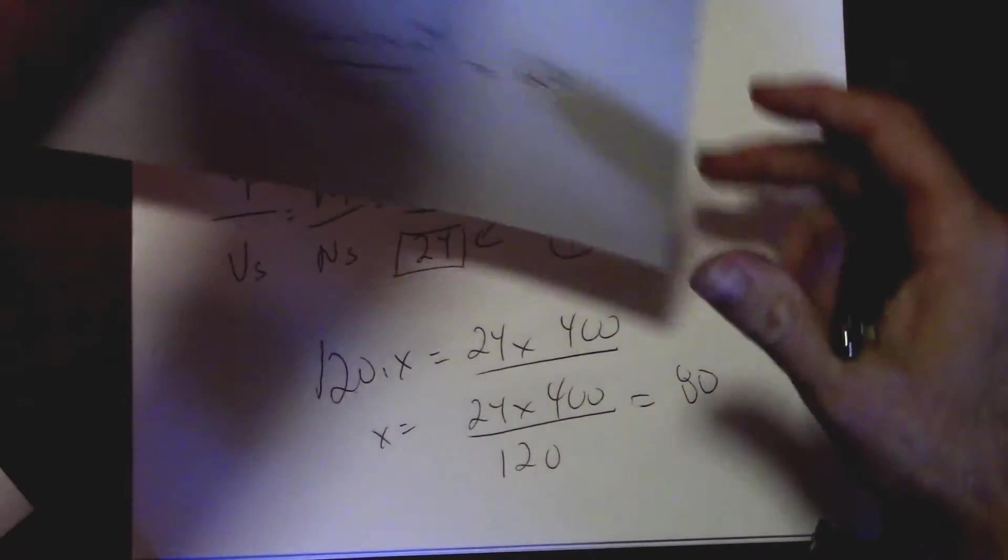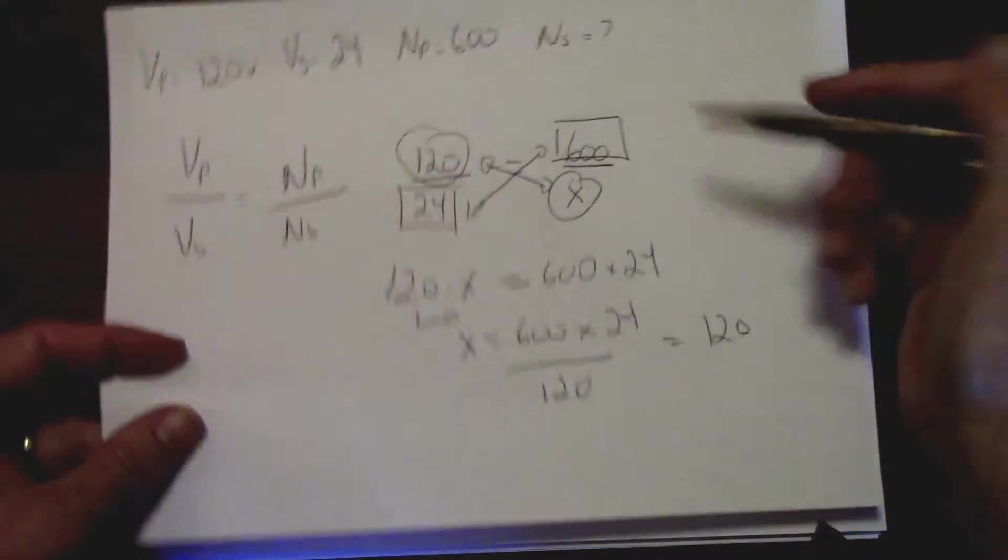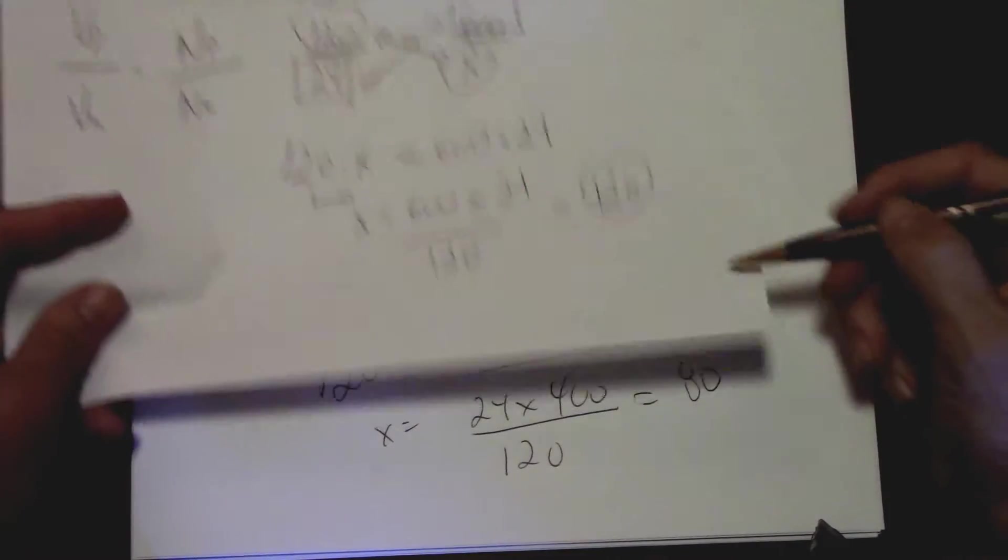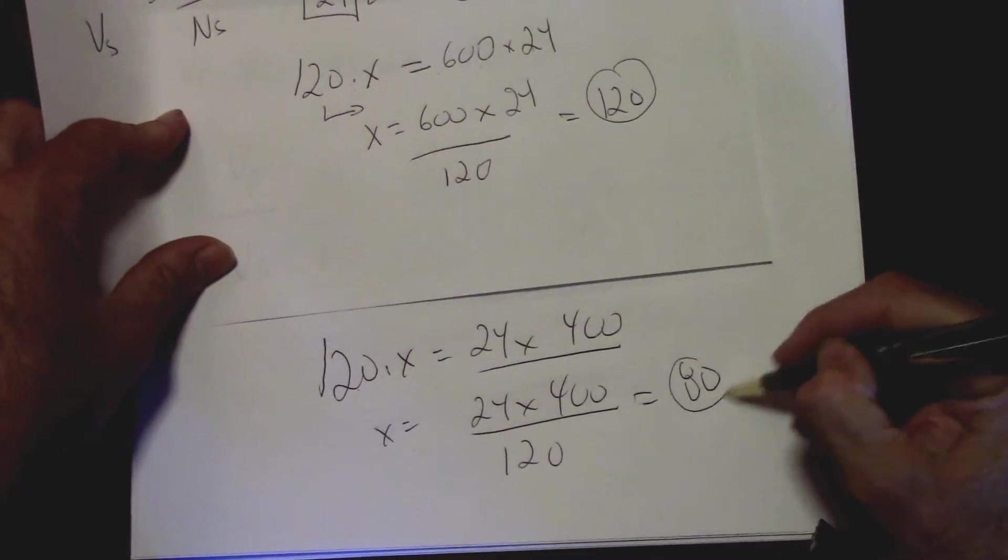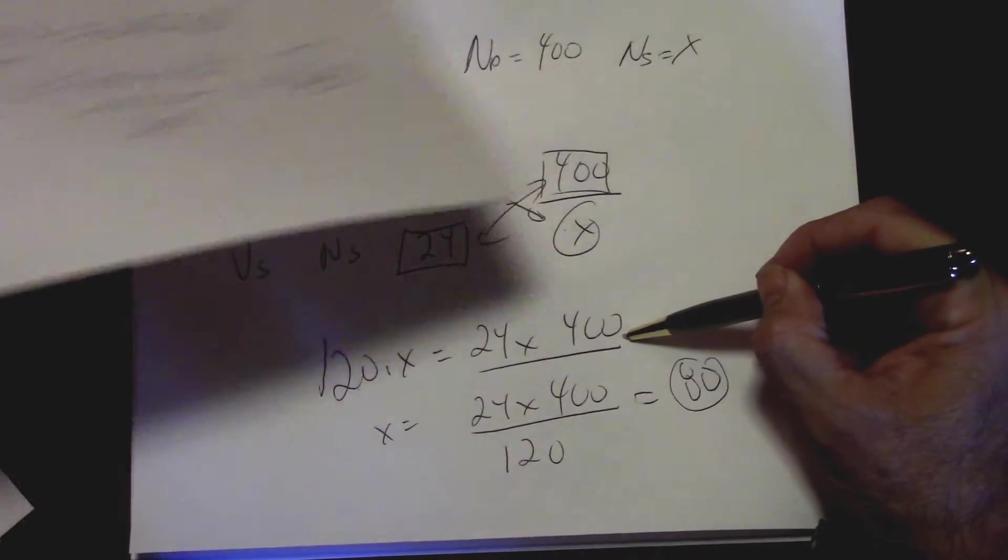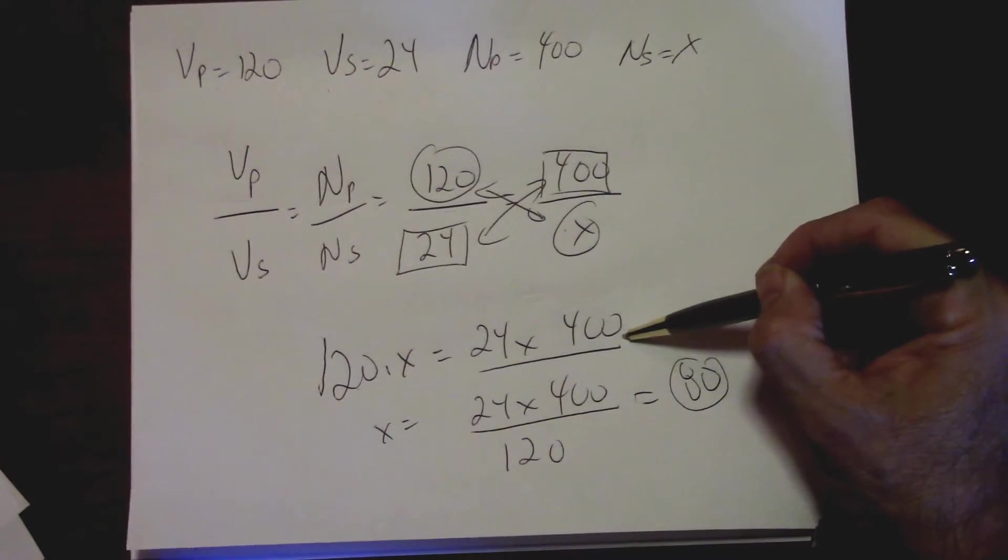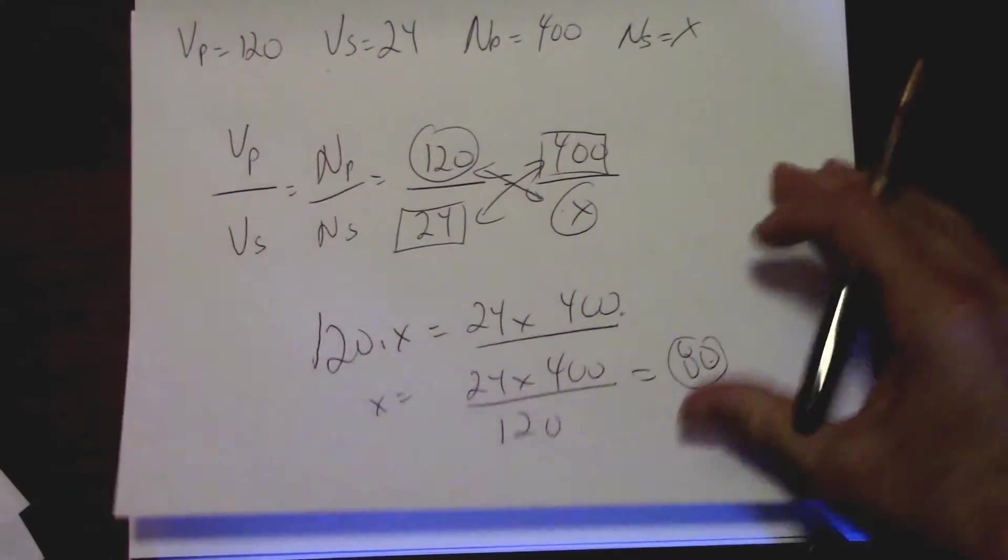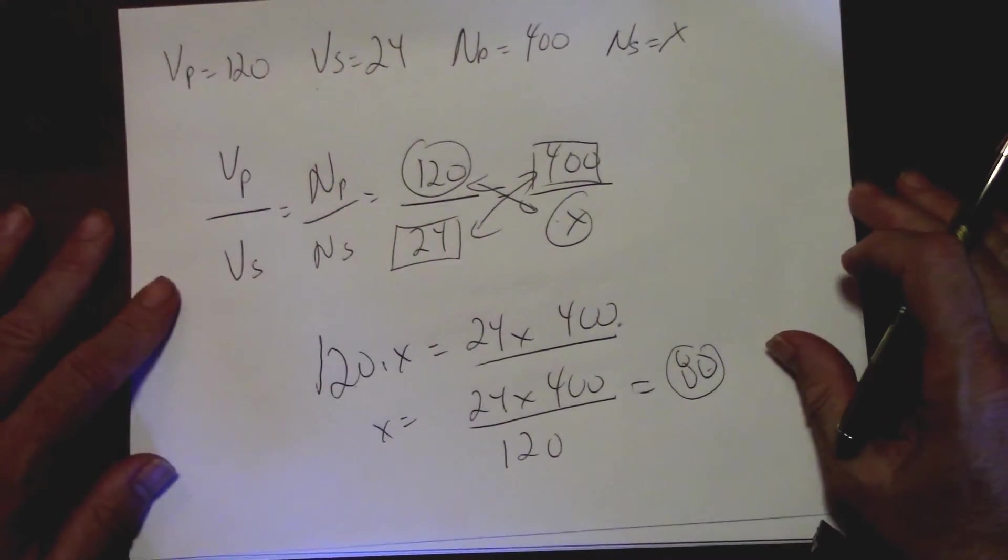So if I bring back the last question, which had 600 in it, I noticed my number of turns was 120. Here it's 120, here it's 80. So by reducing the number of turns on the secondary, we're reducing the number of turns total. Pretty straightforward.